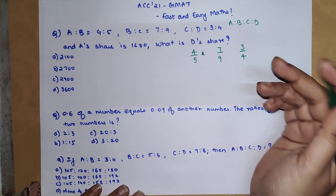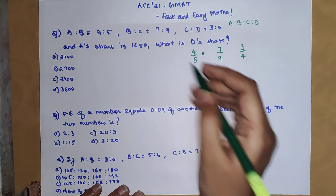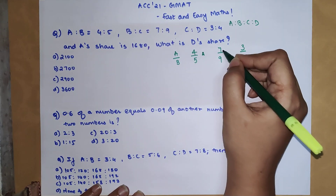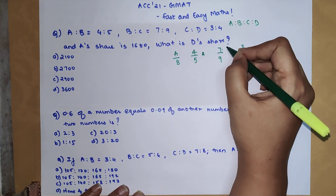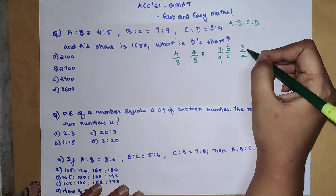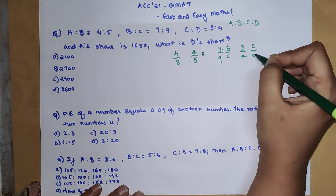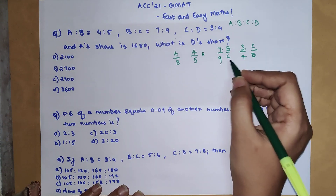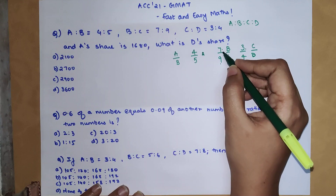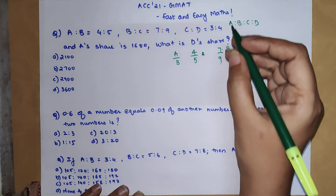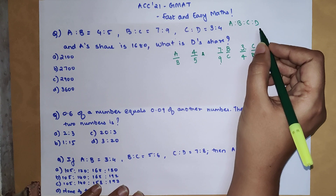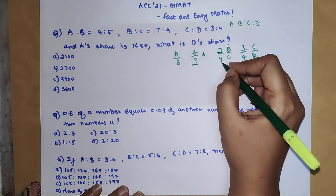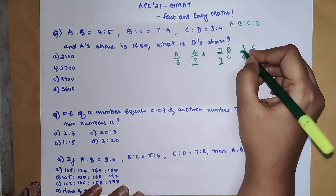Understand that this first fraction is A upon B, the second is B upon C, and the third is C upon D. Now, number 9 and number 3 are both represented by C. Similarly, number 5 and number 7 are both represented by B. So in order to find A is to B is to C is to D, you need to make sure that those repeated numbers become equal.